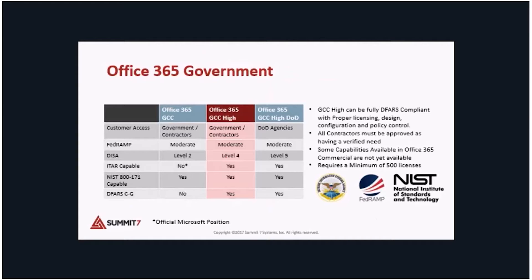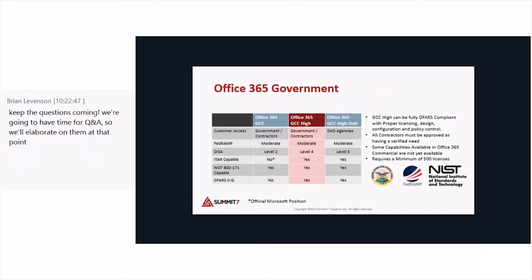The challenge in the Office 365 GCC High environment is that today it requires a minimum of 500 licenses — E1 or higher — and an enterprise agreement to get into that environment. That's a big problem for small companies. Many of you dialing in today are from smaller companies and don't have 500 users, so it's a significant cost increase to move your content to that environment.